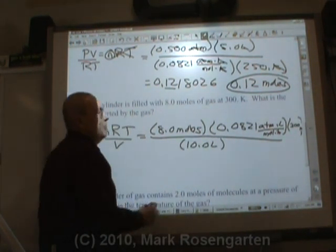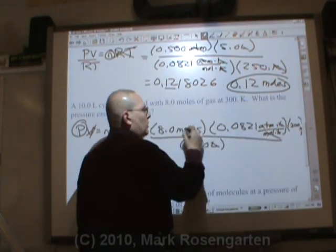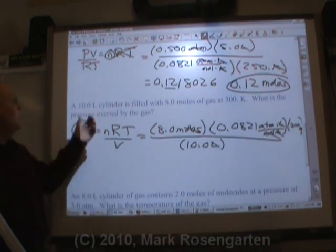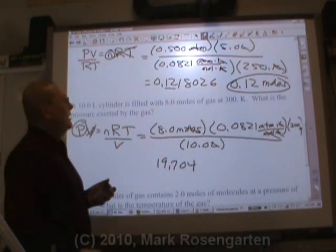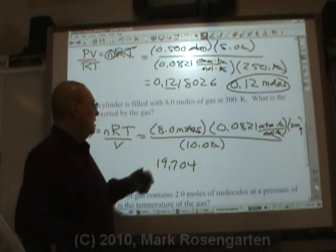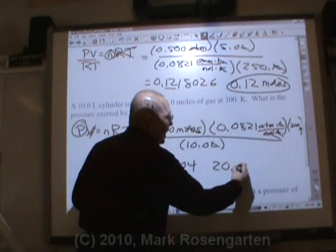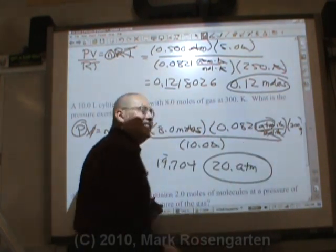This is perfect because liters cancel, moles cancel, kelvin cancels, leaving us with atmospheres, which is what we're trying to find out. And that gives us 19.704. How many sig figs? Two sig figs. 20 atm. How do I know atmospheres? Because it's the only unit that didn't cancel out.